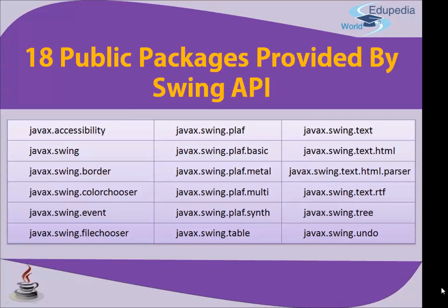This was the slide where we stopped in the previous lesson, and now continuing with the 18 public packages provided by the Swing API, where API stands for Application Programming Interface. As you can see, all 18 packages are listed here, and each one has different functionality.